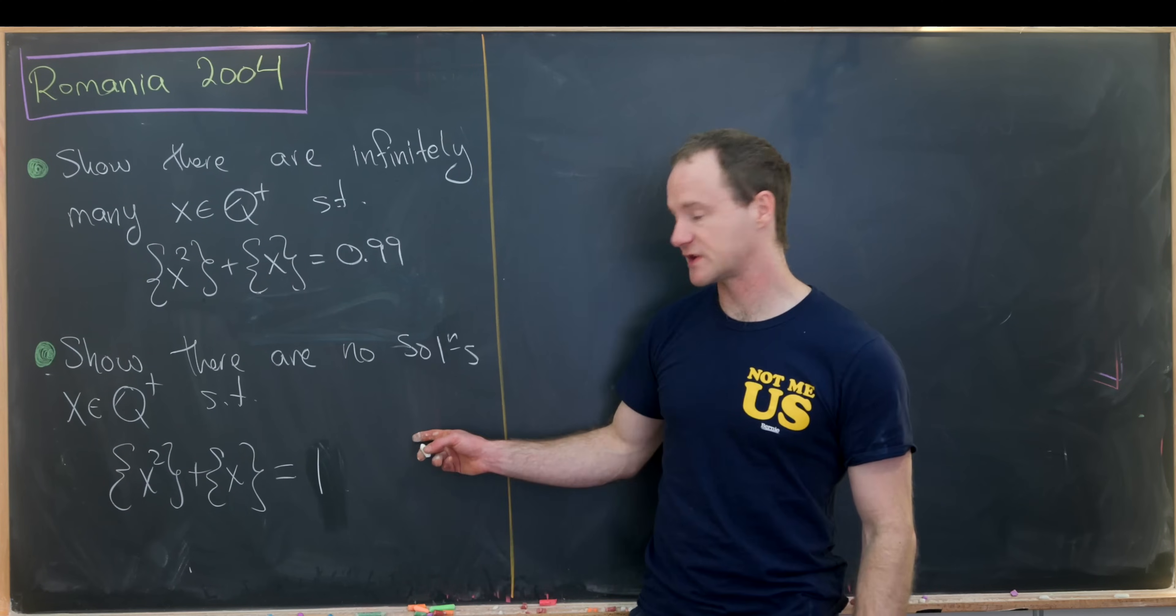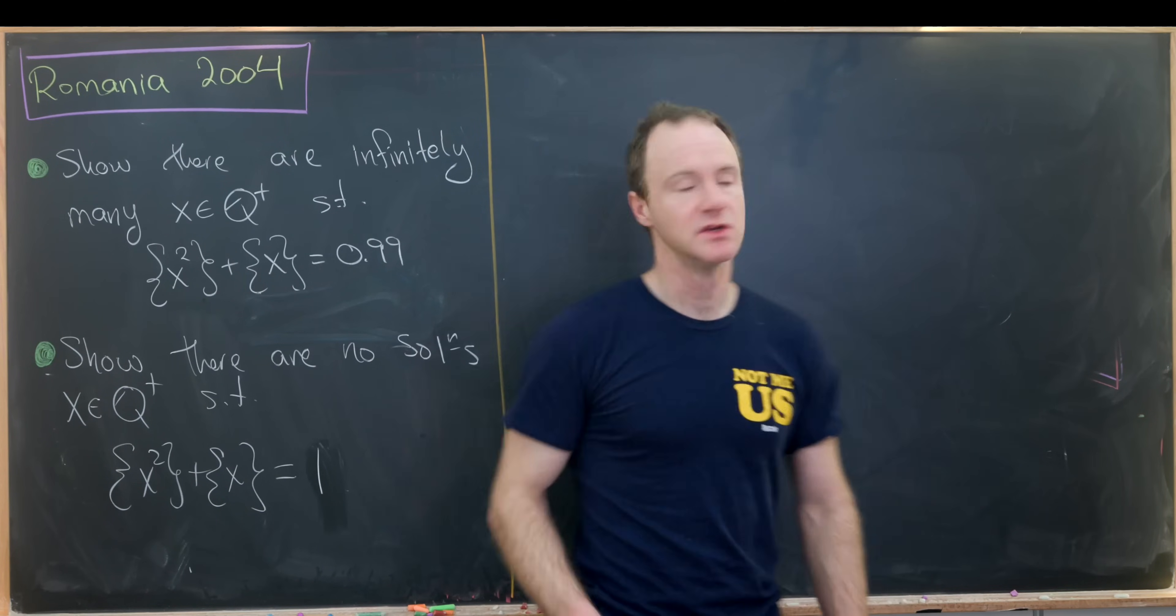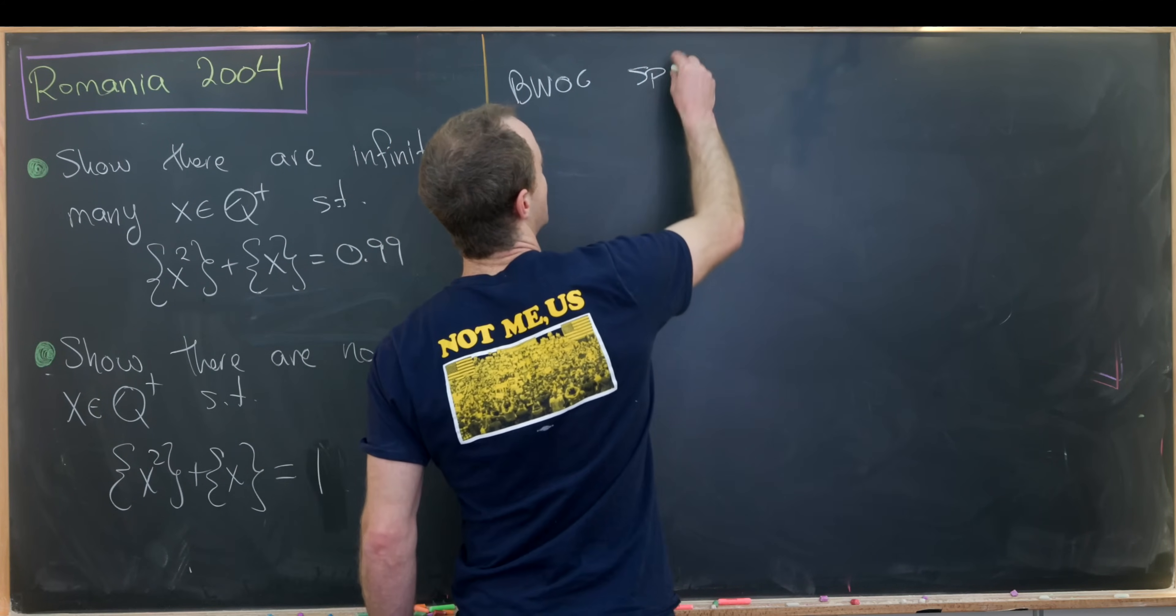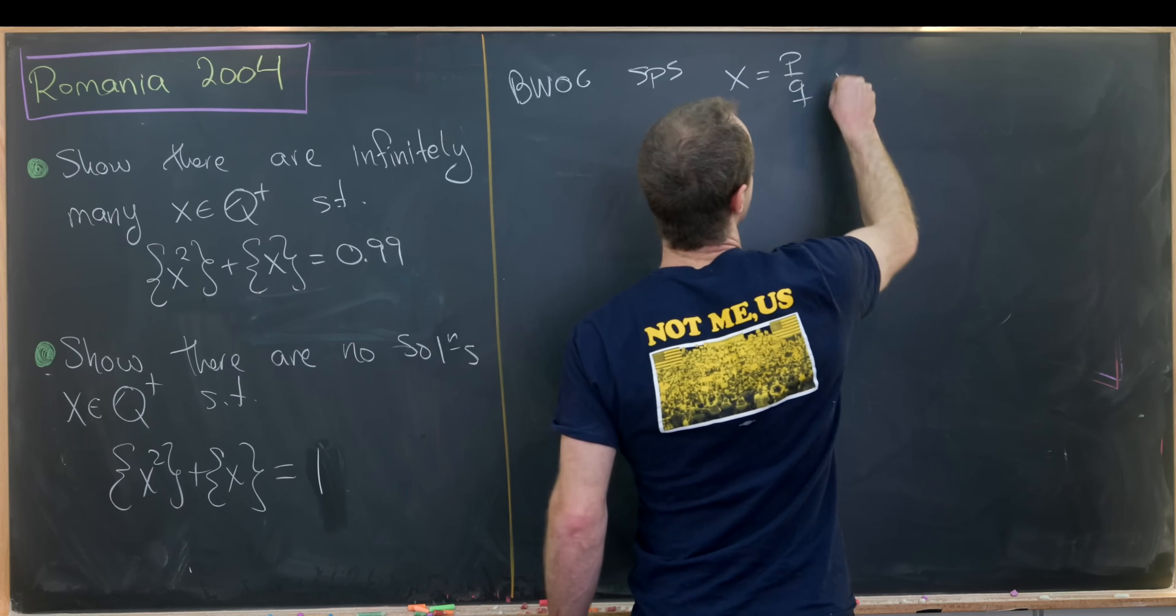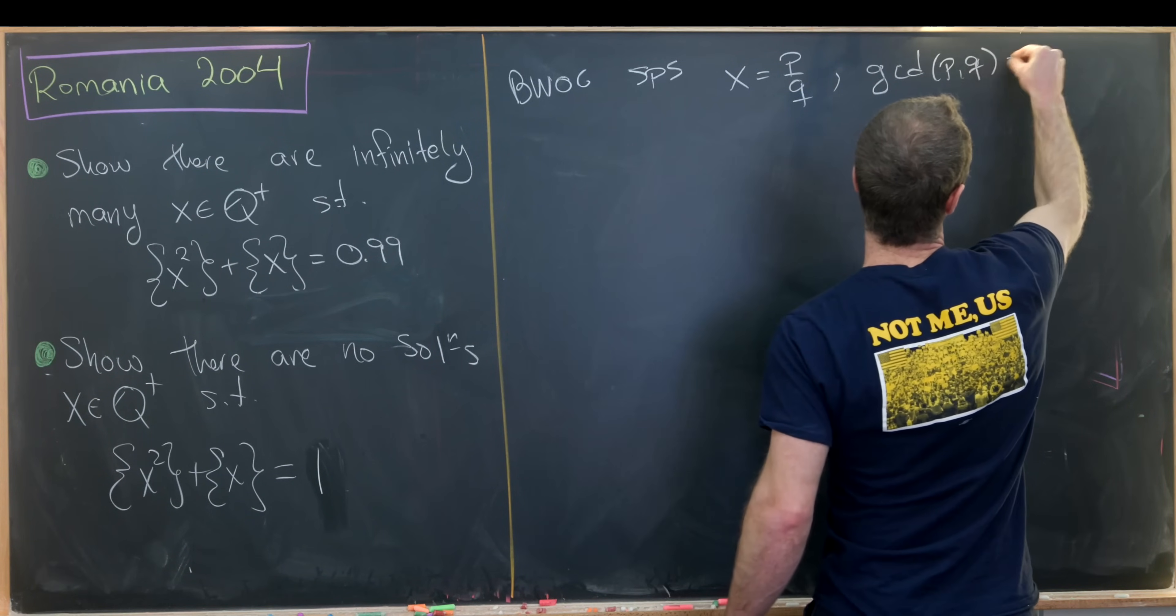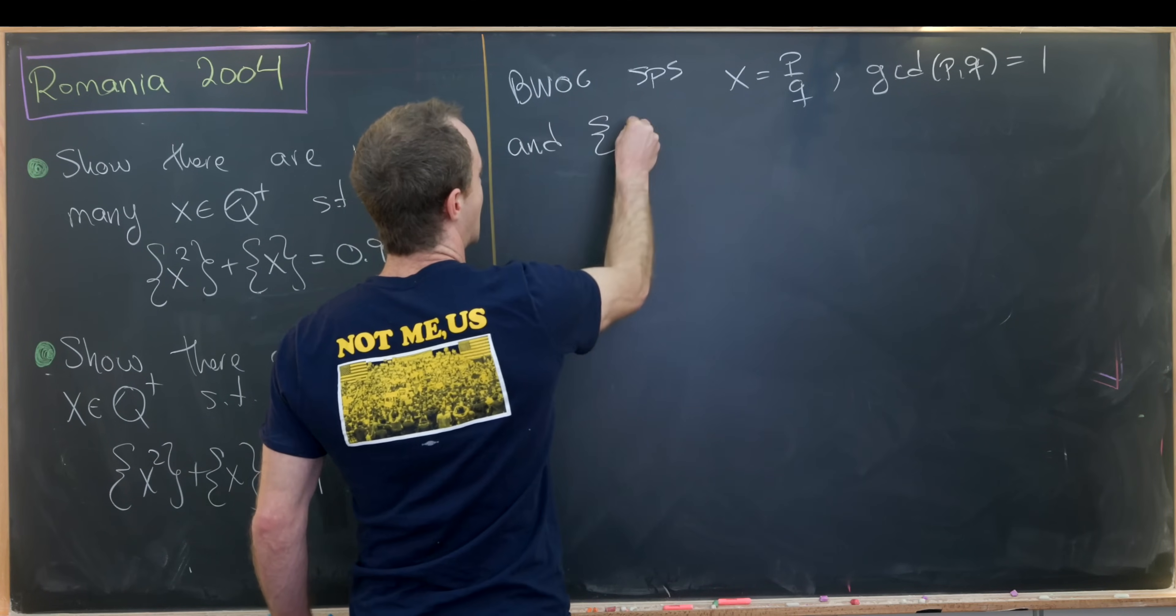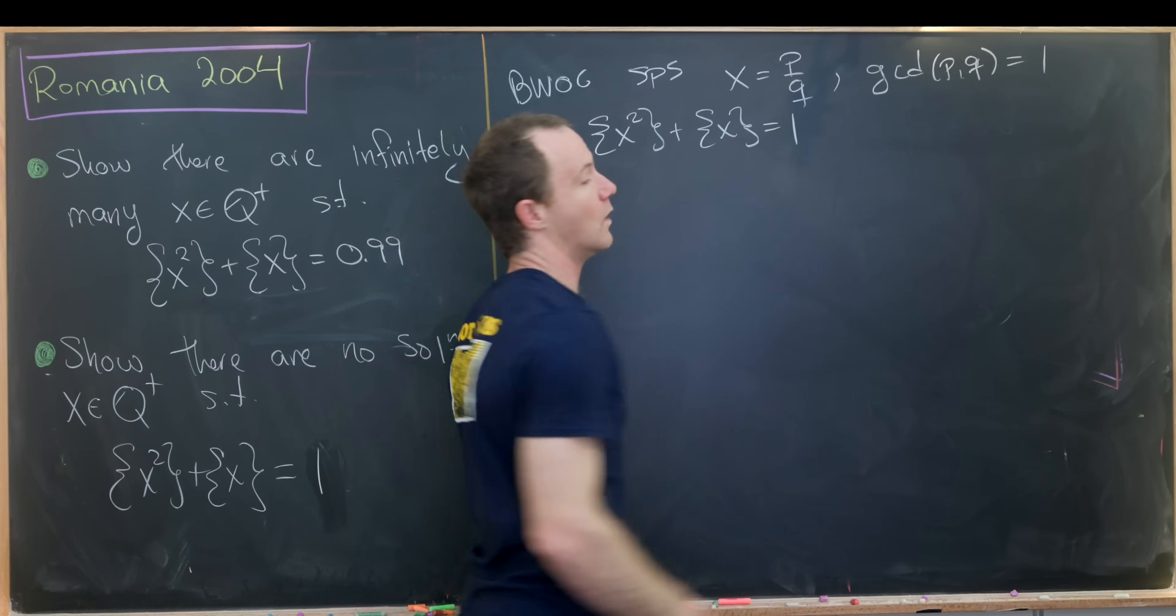In order to solve this second problem, we'll do it by way of contradiction. So by way of contradiction, let's suppose that x equals p over q where the gcd of p and q is equal to 1, and we have fractional part x squared plus fractional part x equals 1.